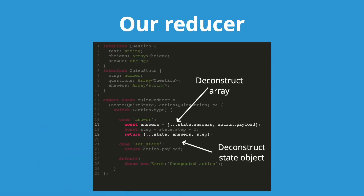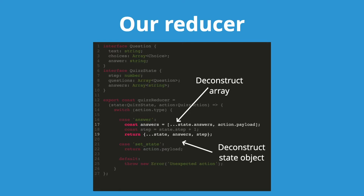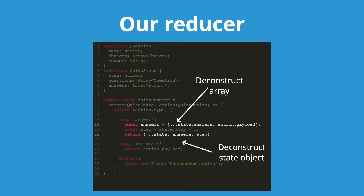Here we're deconstructing the array of answers and adding the payload as an additional item in the answers. The reason we don't simply push the answer onto the answers array is that this would actually be modifying the initial state. To return the state, we deconstruct the state itself and add in the answers and the current step.